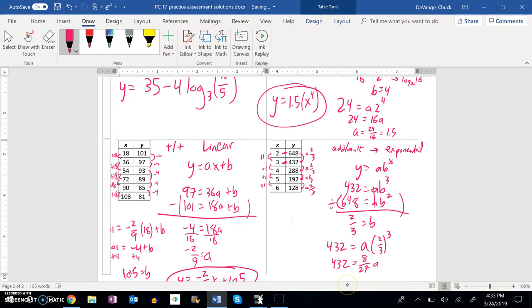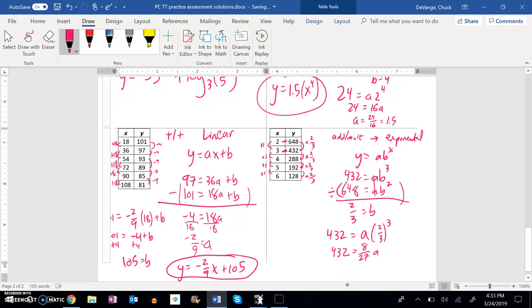And so what I'm going to do then for my next step is just multiply this by 27 eighths - multiply by the reciprocal. So 432 times 27/8, and I get 1458.